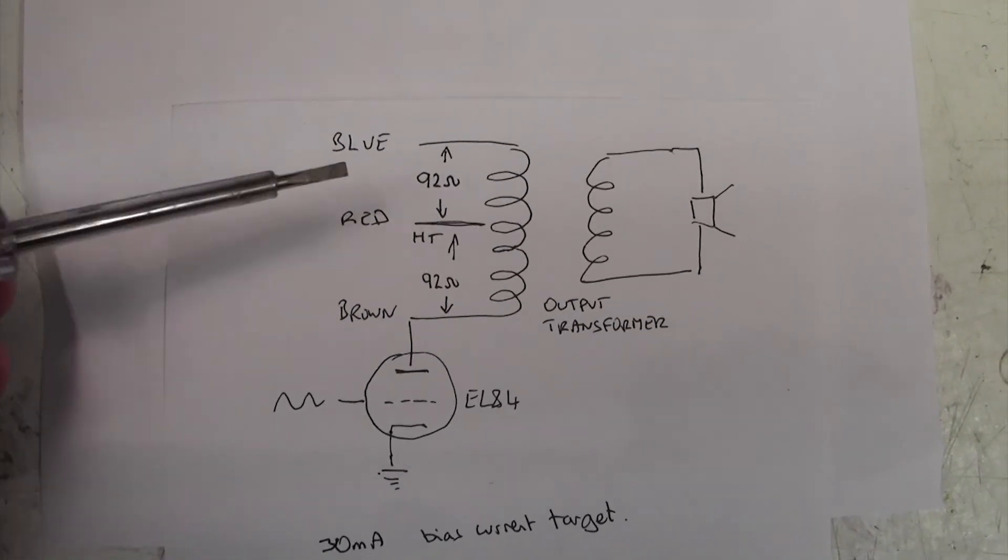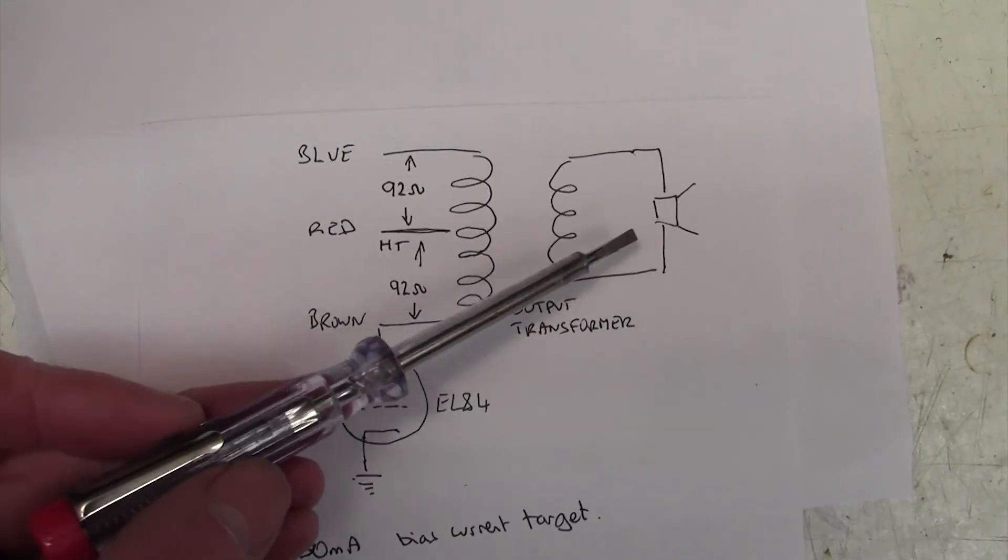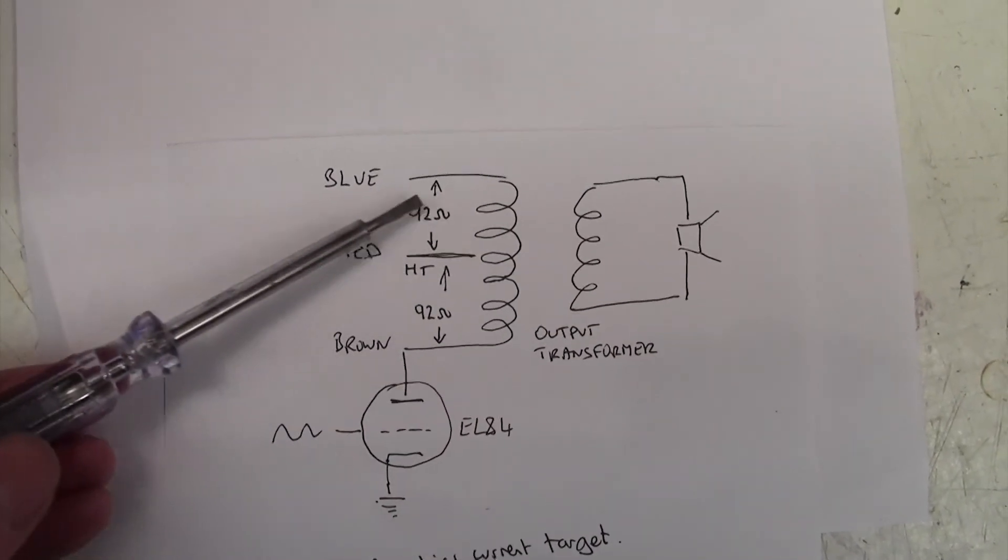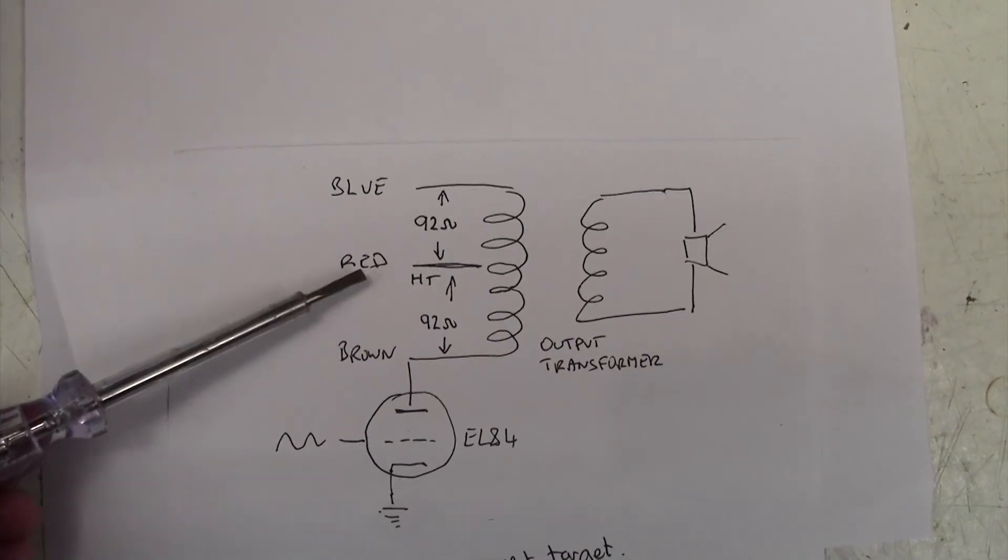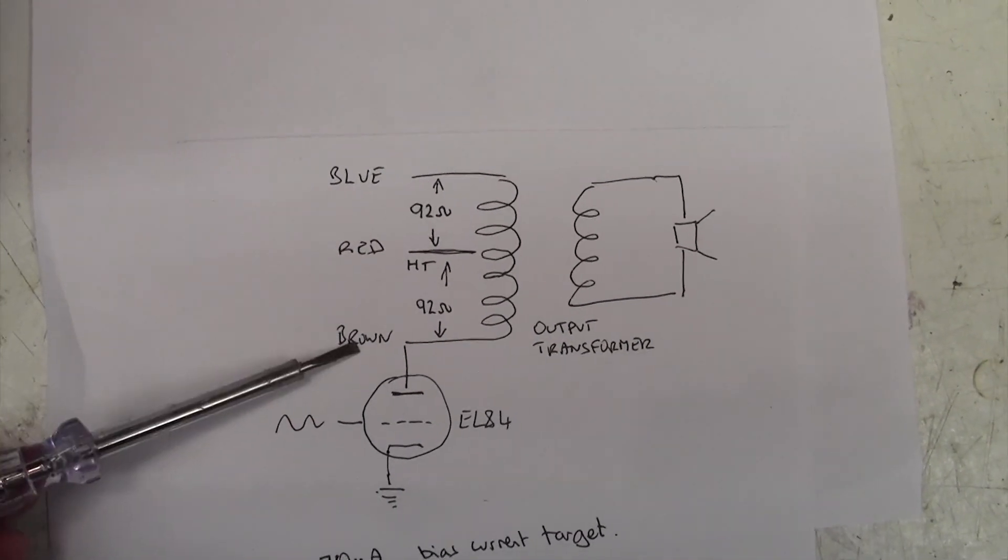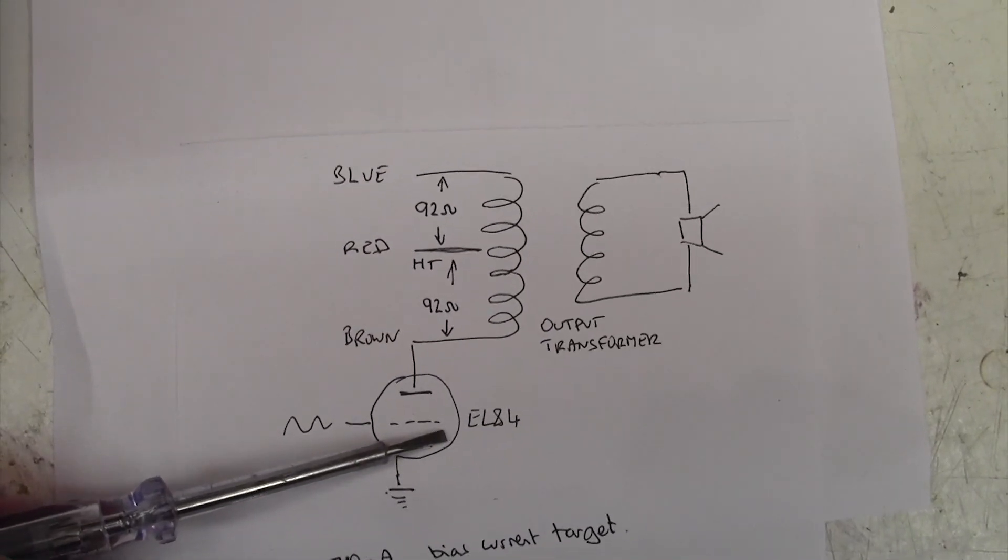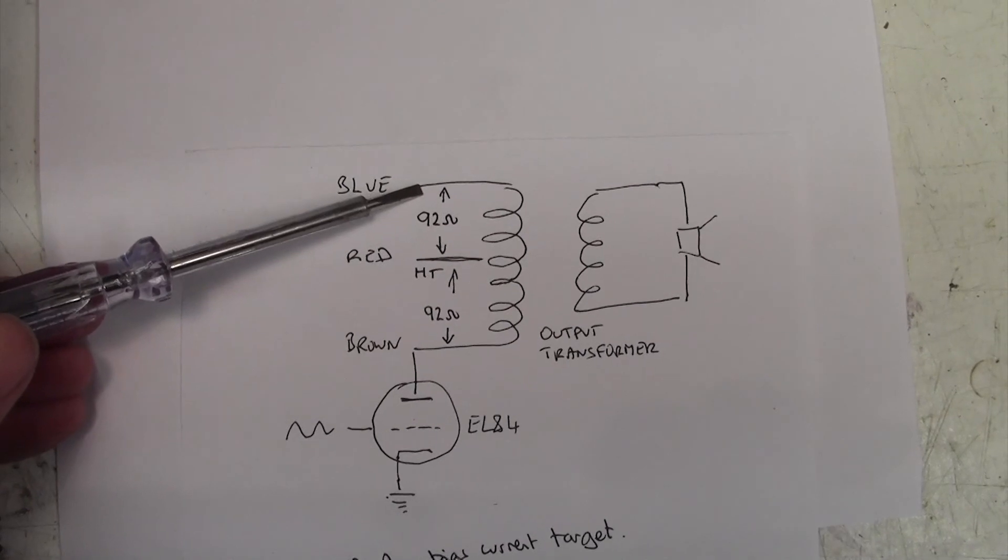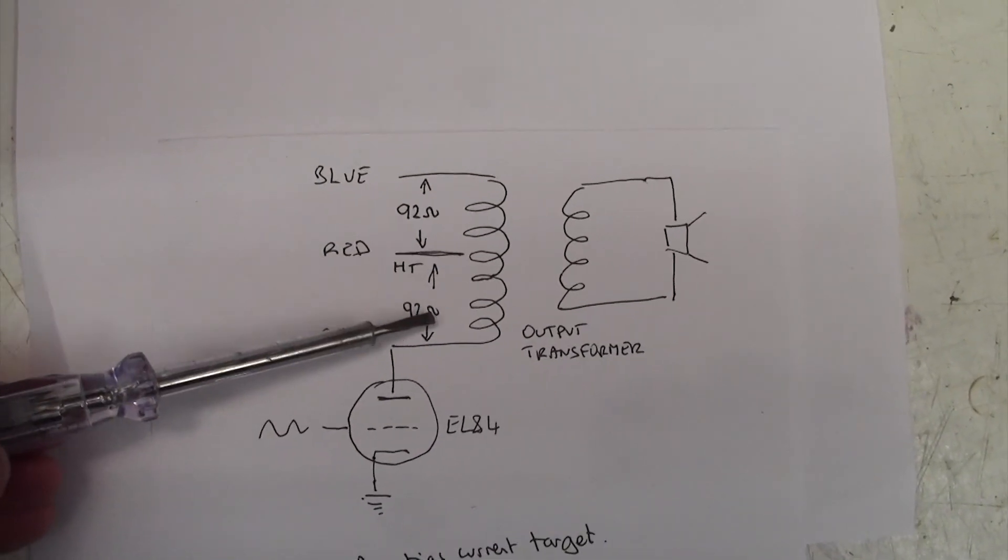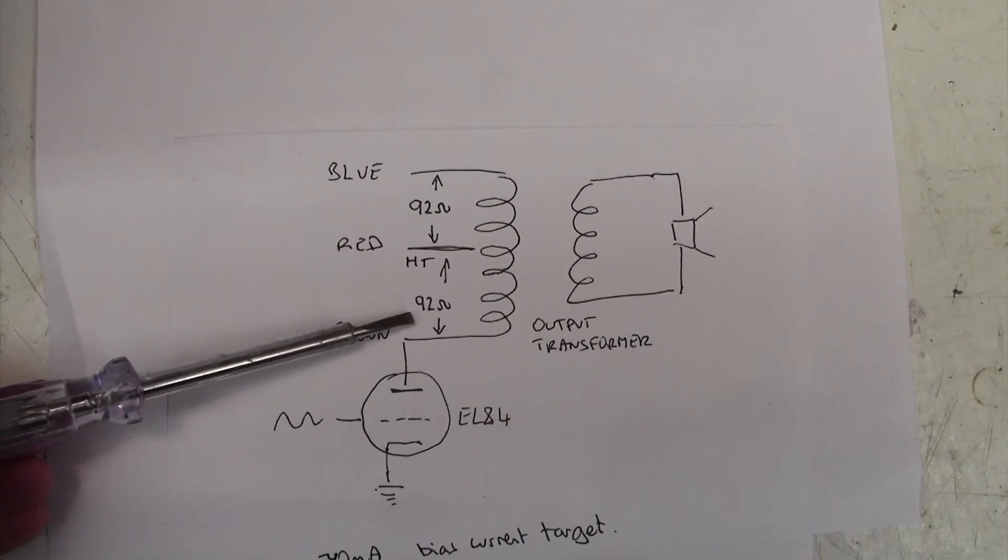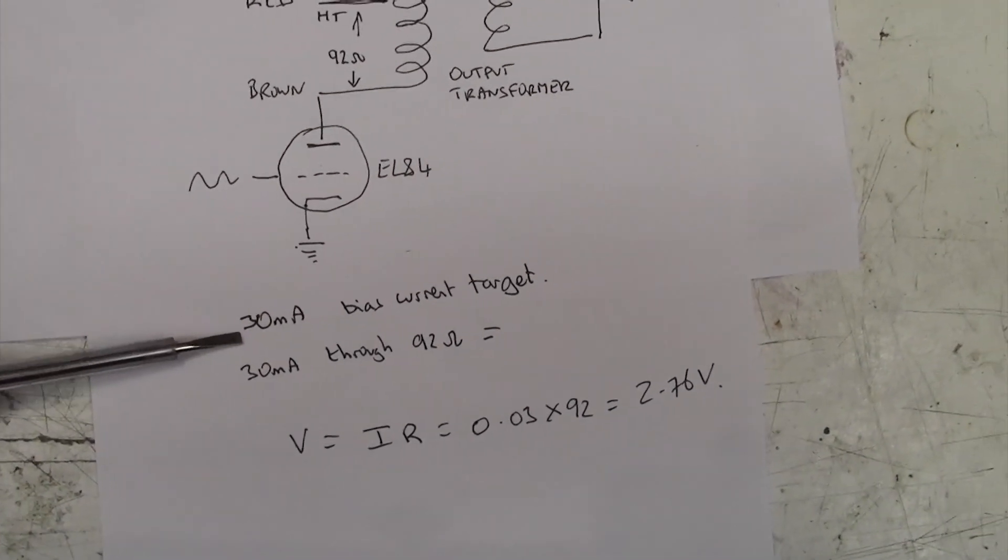Okay, here's the situation. This is the primary of the output transformer. Here's the secondary of the output transformer. And of course, the loudspeaker is attached to the secondary. Here are our three wires inside the amp: the blue, the red, and the brown. If you remember, we were going to connect our meter across the red and the brown, which would measure the current through this tube here, this EL84, one of the output tubes. I've only shown one. The other one is hanging off this blue wire here. So I measured the resistance of this half of the output transformer, and it came out at 92 ohms, not 100 ohms. So let's see how that translates down.